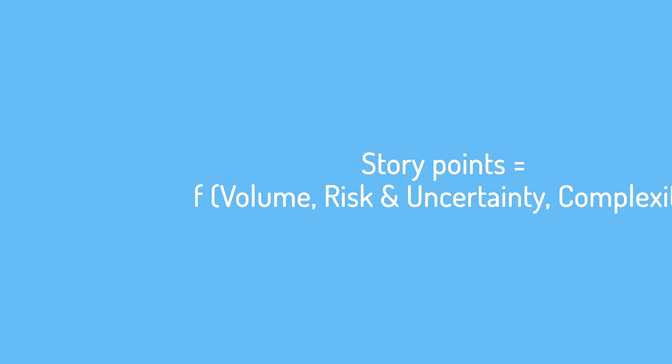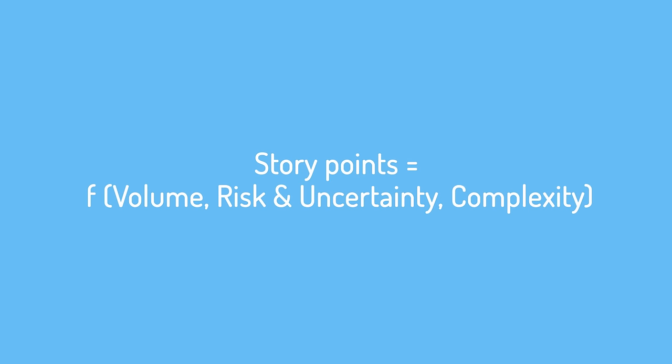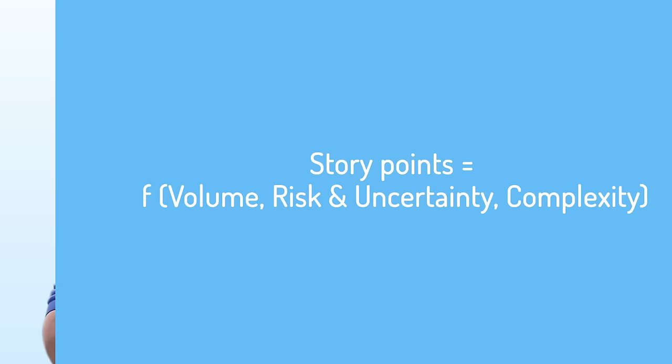Story points are also a function of the complexity of the work to be done. Work that is complex will require more thinking, may require more trial and error experimentation, perhaps more back and forth with a customer, may take longer to validate, and may need more time to correct mistakes — so complex work is given a larger estimate. Each of these factors — volume of work, risk, uncertainty, and complexity — is combined based on the impact each has on the likely effort to complete a product backlog item.